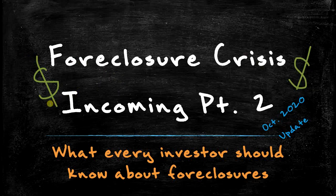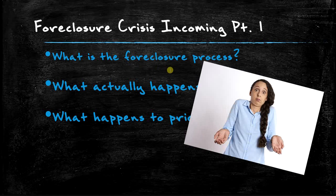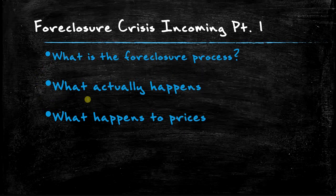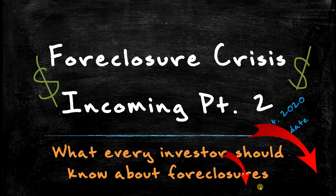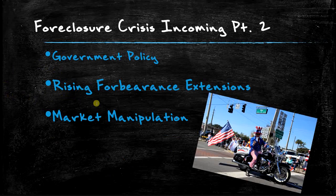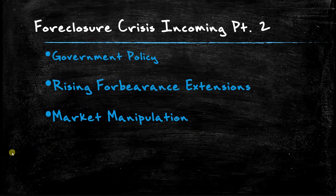Hey, welcome back for part two of our foreclosure crisis incoming series. If you haven't watched it, I'll link part one right up here. We covered what the foreclosure process actually is — it's not six steps, it's actually ten. In this video we'll be talking about government policy, rising forbearance extensions, and market manipulation.